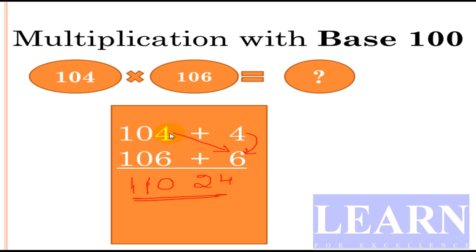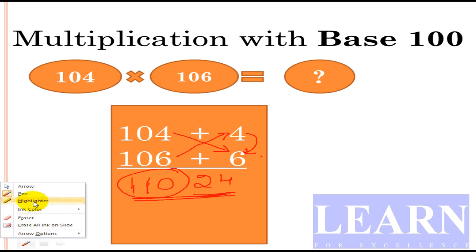Look here: 104 plus 6 or 106 plus 4 gives 110, and 4 times 6 is 24. That's the final answer. No more addition, no subtraction, nothing. Direct answer.